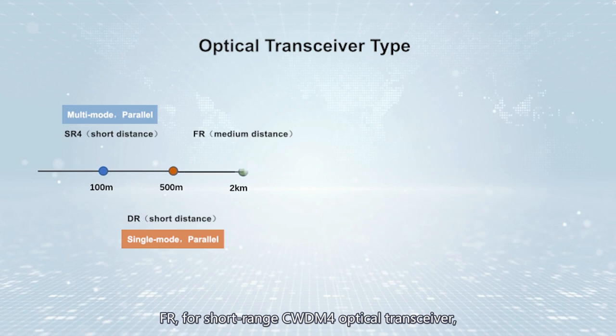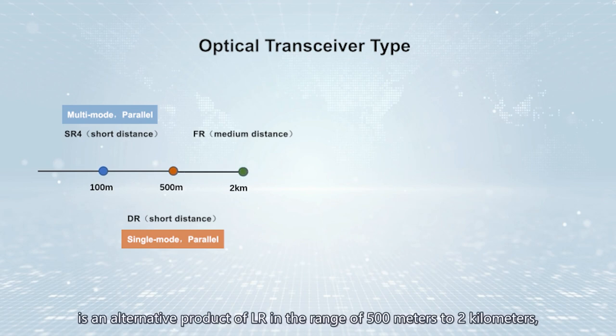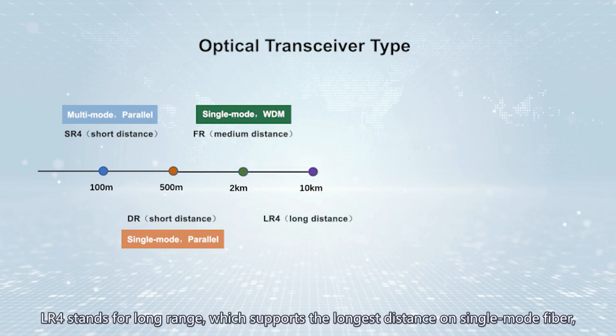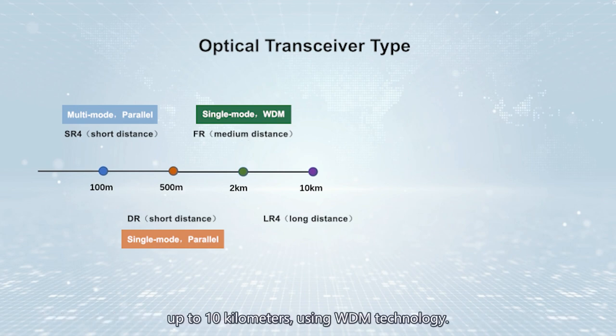FR, for short-range CWDM optical transceivers, is an alternative product to LR in the range of 500 meters to 2 kilometers, using wavelength division multiplexing technology. LR4 stands for long-range, which supports the longest distance on single-mode fiber, up to 10 kilometers, using WDM technology.